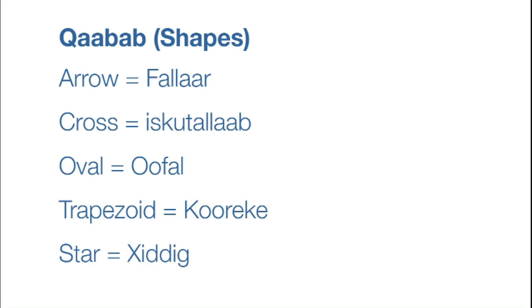Oval — I couldn't find a translation for oval, so I just used this transliteration: oval. Trapezoid is korreke. Star is hiddig.